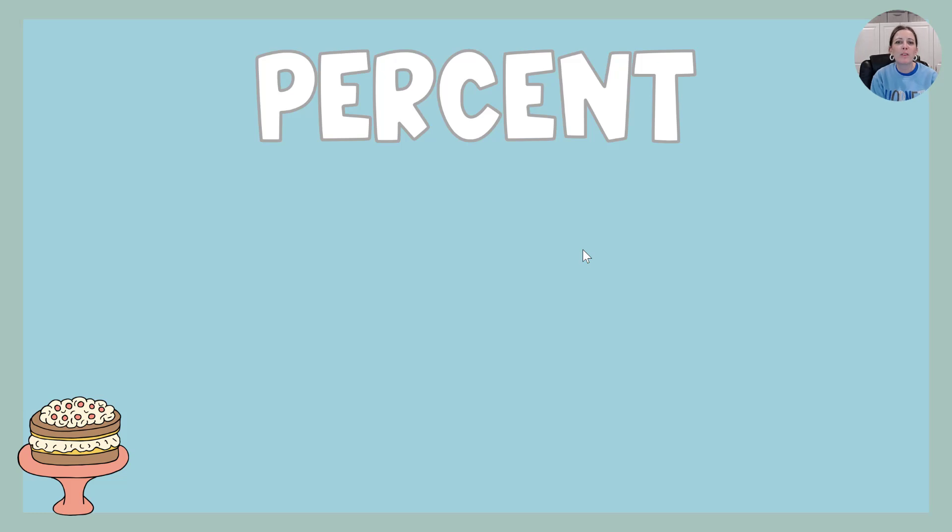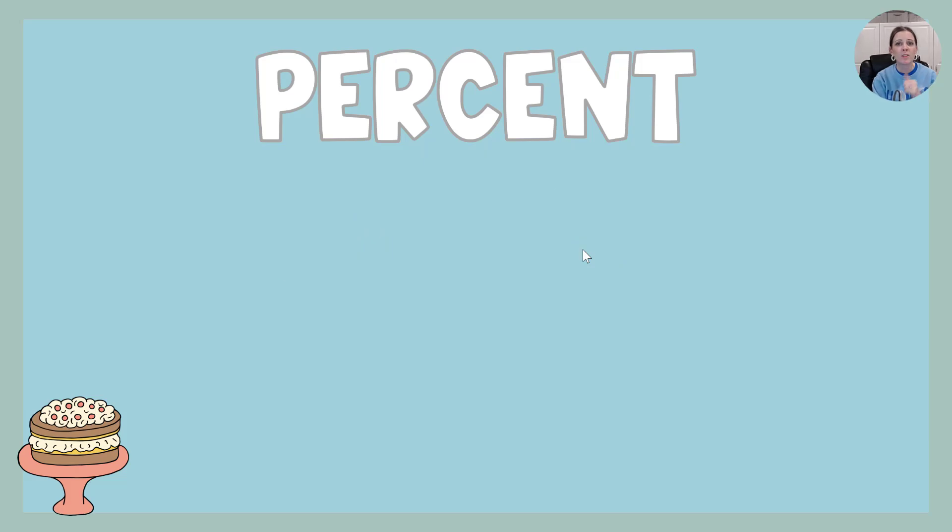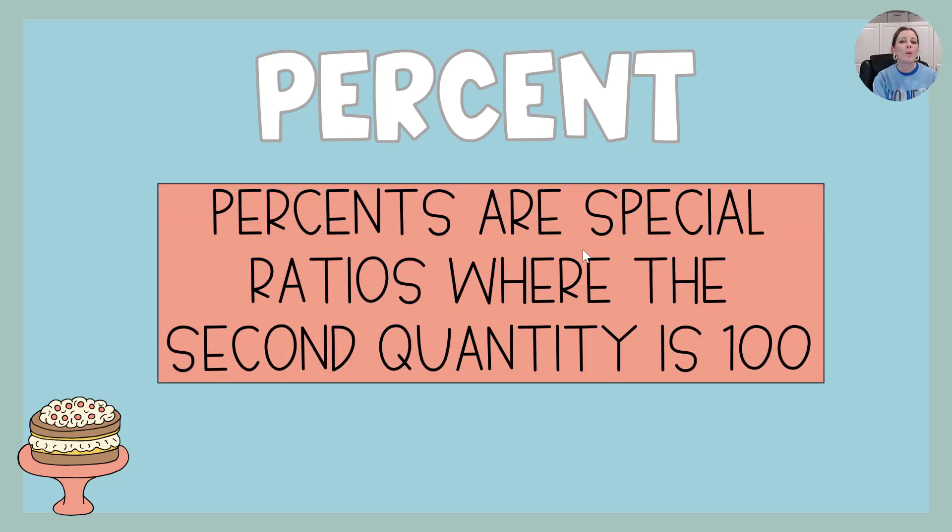Let's start with a little bit of review from our last video and talk about what percent means and what it is. Well we said last time that per means divide and cent means 100, so percent means out of 100. We also said that a percent is a special ratio where the second quantity is 100.